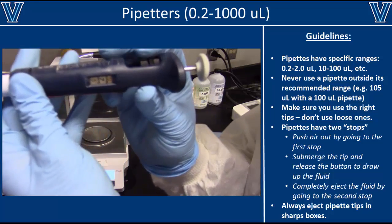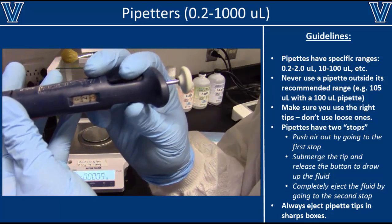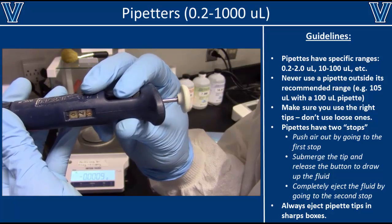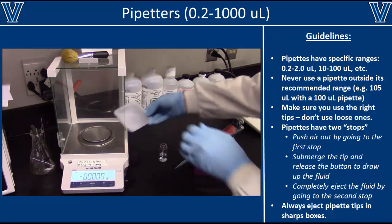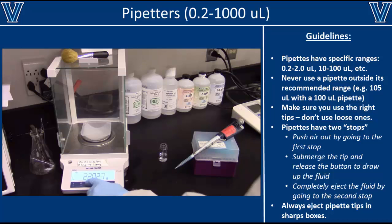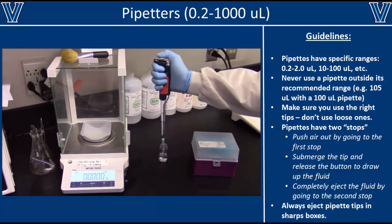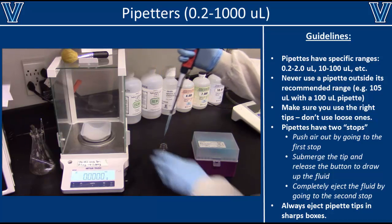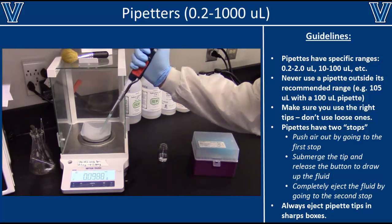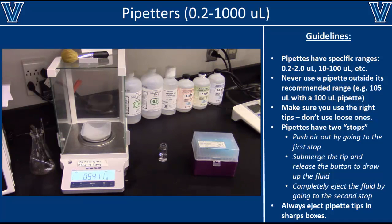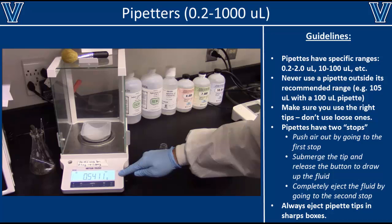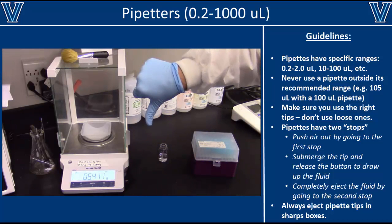If you ever think a pipette isn't accurate, you can test it using an analytical balance. In this example, we are going to test a P1000 pipette by setting it to 700 microliters. Since the density of water is 1 gram per ml, 700 microliters of water should weigh 700 milligrams. Begin by taring a weigh boat, and then slowly transferring the liquid volume to the weigh boat. Make sure you completely eject all of the liquid, then close the doors on the analytical balance and wait for the reading to stabilize. In this case, the reading is only 541 milligrams, which is much less than the expected 700 milligrams.